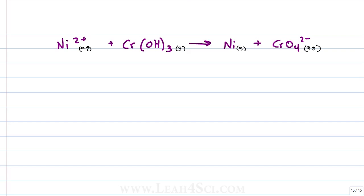First step, find the oxidation number. Let's start with the easy ones. A monoatomic ion with a charge of +2 has an oxidation number of +2, a solid metal has an oxidation number of 0.